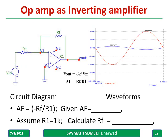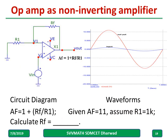For the op-amp as an inverting amplifier: input is given, the output is amplified but with phase inversion. The gain equation is Af = −Rf/R1. For a given gain, you have to find the values of Rf and R1 — you can assume R1 = 1k and calculate Rf.